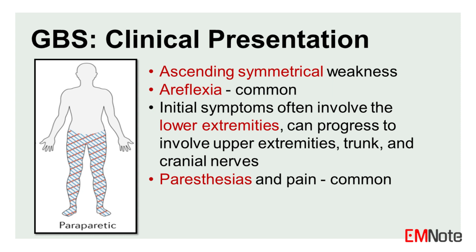Guillain-Barré syndrome typically presents with ascending, symmetrical weakness and areflexia. The initial symptoms often involve the lower extremities and can progress to involve the upper extremities, trunk, and cranial nerves. Paresthesia and pain are also common.